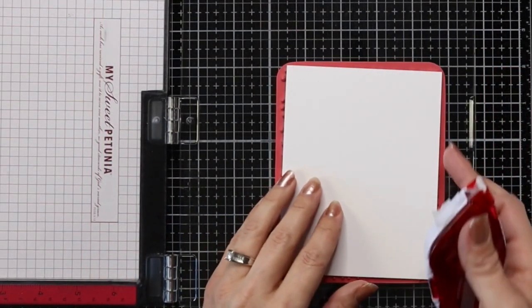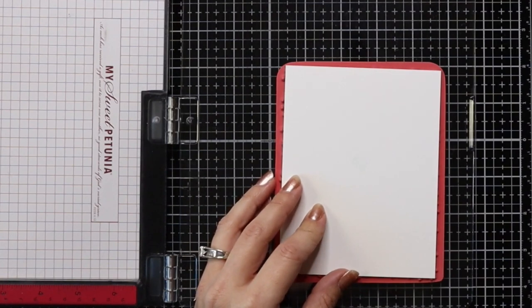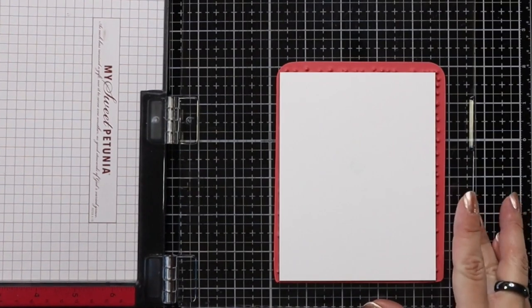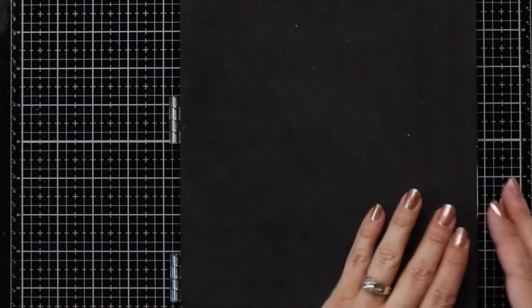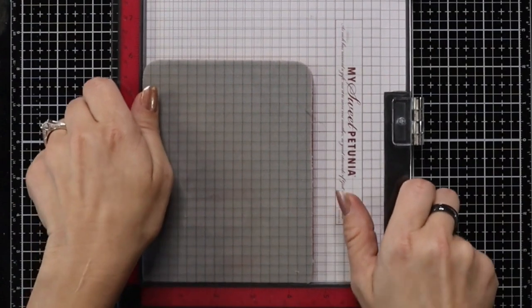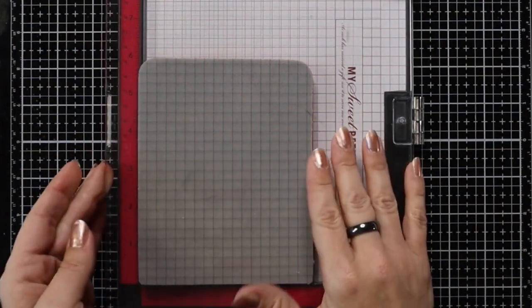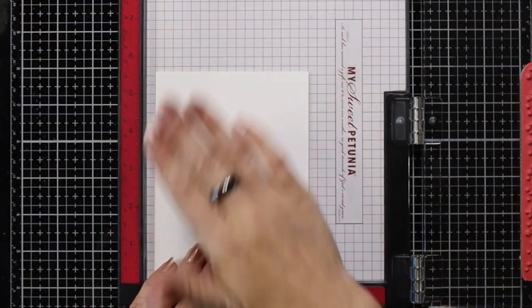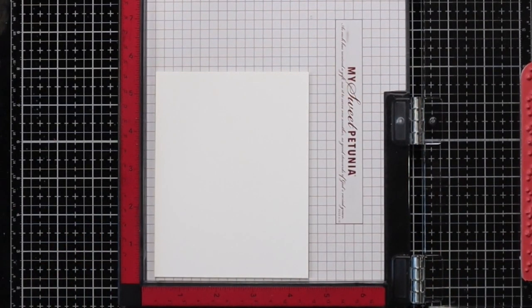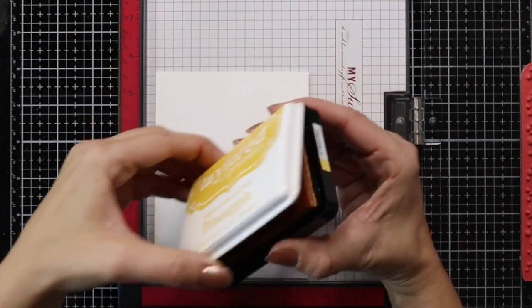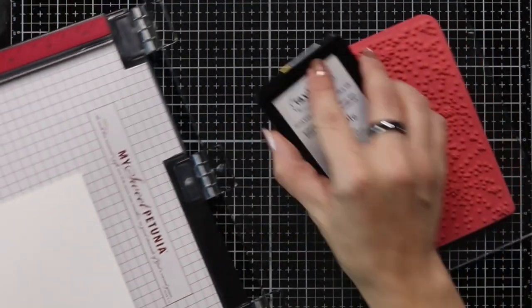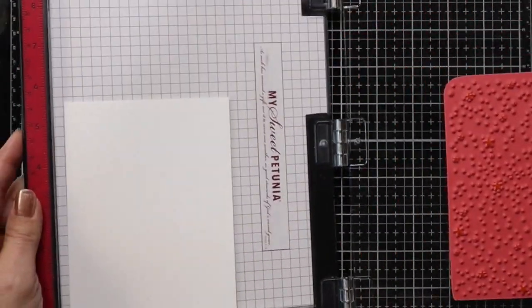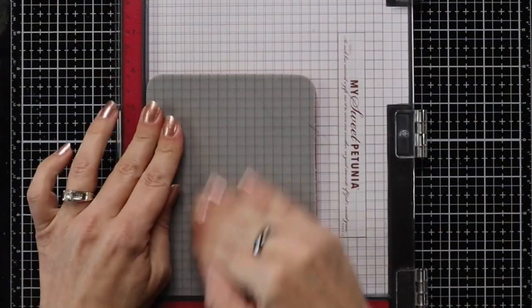Now I'm going to work on the background of my first card using the fireworks background. I started by placing my background in the MISTI and then I lined up my cardstock on top. I put a little bit of adhesive on the back of that paper and then flipped my MISTI over. This is going to allow me to place my cardstock where I want it and that adhesive will stick to the bottom of the MISTI so it stays in place. Then I can ink this background up with the pineapple ink and this is such a cool background.